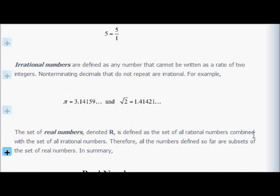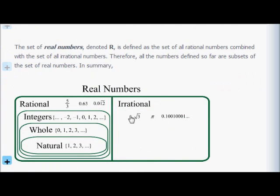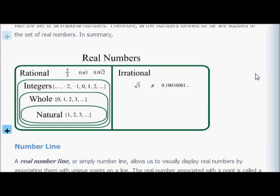The set of real numbers is all the irrational numbers and all the rational numbers. Within the rational numbers we had integers; within integers we had whole numbers; within whole numbers we had natural numbers. You also have the irrational numbers, and in total it's all real. There are also numbers where you take square roots of negative numbers — those aren't real, those are imaginary. The real numbers are the rational ones and the irrational ones. Ones with terminating or repeating decimals are rational; non-terminating, non-repeating decimals are irrational.